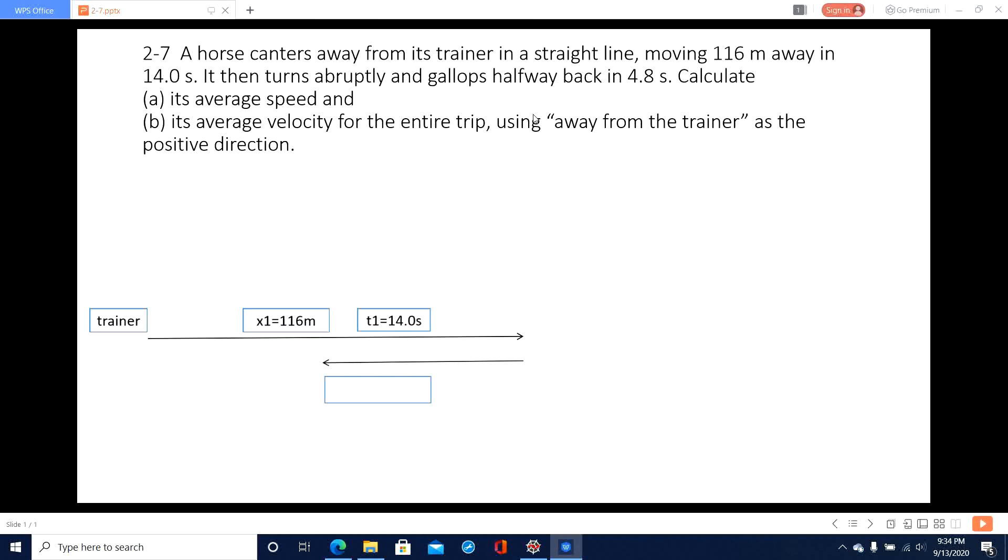It turns halfway back in 4.8 seconds, so t2 is 4.8 seconds. And because it turns halfway back, the distance x2 is just x1 divided by 2. Then it needs you to calculate its average speed and average velocity.